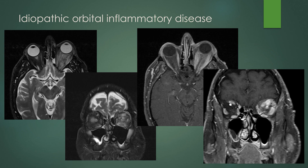Idiopathic orbital inflammatory disease can actually present in multiple ways. You can get enhancing infiltration throughout the retroorbital fat causing proptosis, more mass-like enhancement within the retroorbital fat, or enlargement of one of the extraocular muscles. It can be unilateral or bilateral, though many times you'll see it unilaterally. It can affect the lacrimal gland. So if you see a weird inflammatory process with enhancement and a patient presents with eye pain, don't forget idiopathic orbital inflammatory disease in your differential.